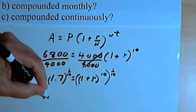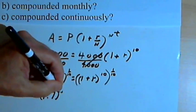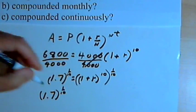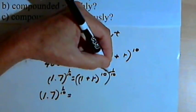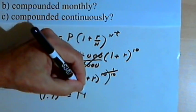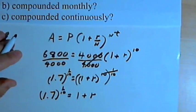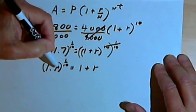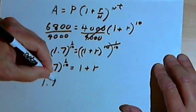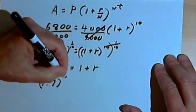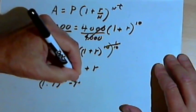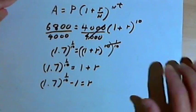This means I'll have 1.7 raised to the 1 tenth power, and that will equal, this will just be 1 plus r. And then let's finish getting the r all by itself. I'll just subtract 1 from both sides of the equation, so I have 1.7 raised to the 1 over 10 minus 1 equals r.